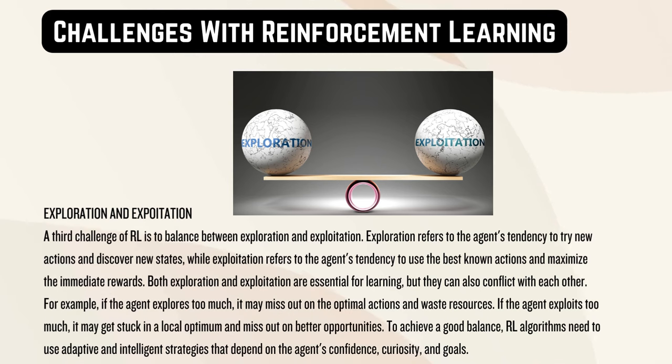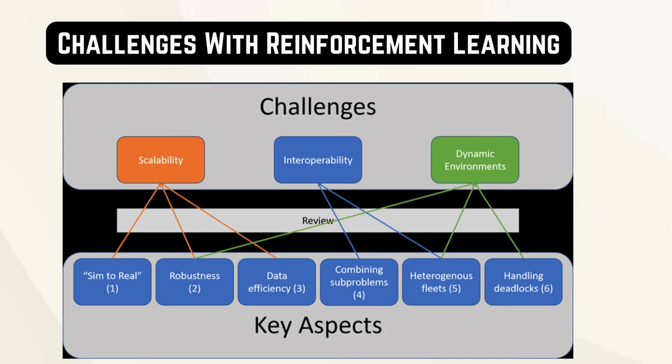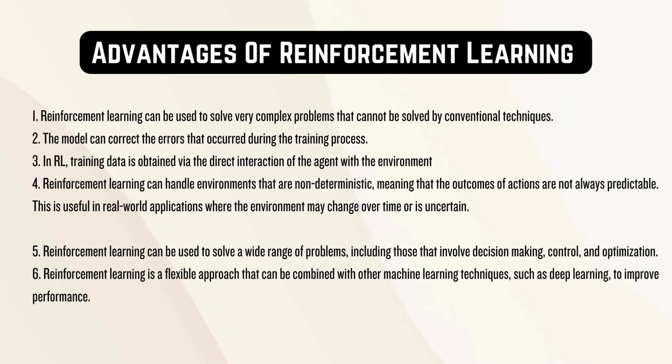In reinforcement learning, regret refers to the difference between the expected cumulative reward of an optimal action and the actual cumulative reward obtained by taking a different action. Essentially, it measures how much a decision-making agent would have gained if it had always chosen the best action in hindsight. One of the most important advantages of reinforcement learning is that it may be used to solve complicated problems.